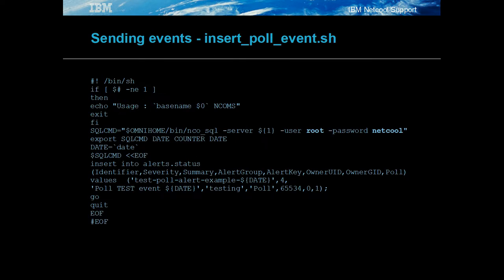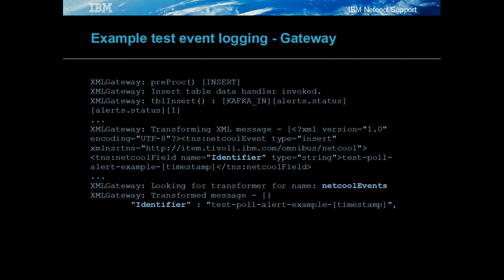The insert_pole_event.sh script is used to insert an event into the Kafka_in object server that meets the gateway's filter for event forwarding. In the debug log of the gateway, the insert event will be seen with the identifier and transformer name being logged.